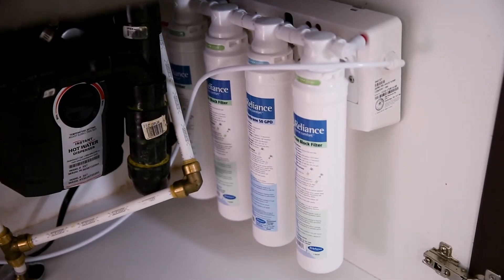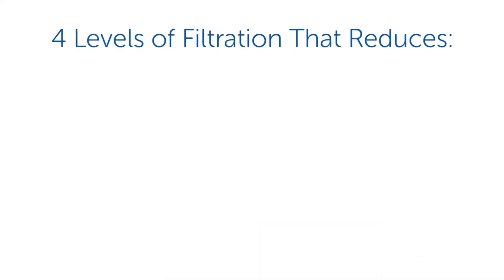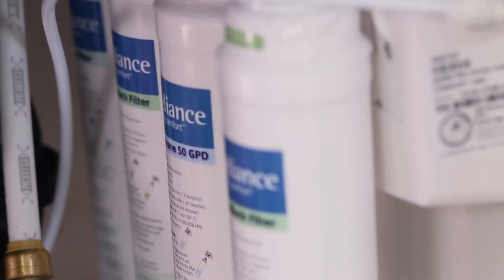The Reliance reverse osmosis system goes through four levels of filtration that reduces contaminants such as pesticides, chlorine, arsenic, sodium, and lead from the water your family consumes.